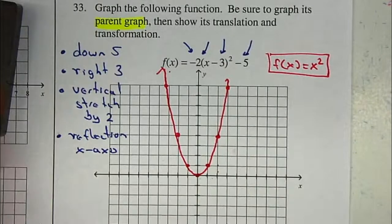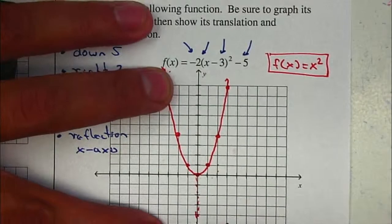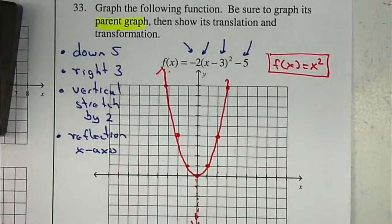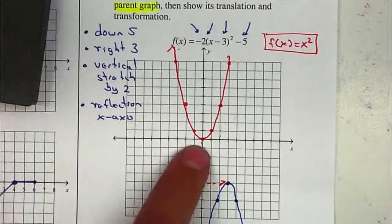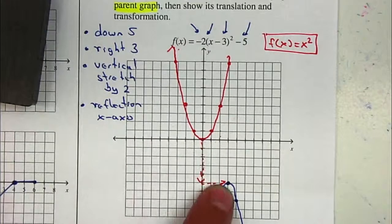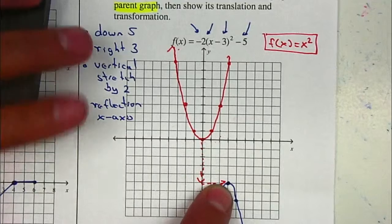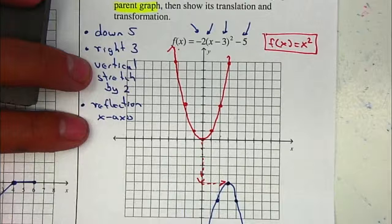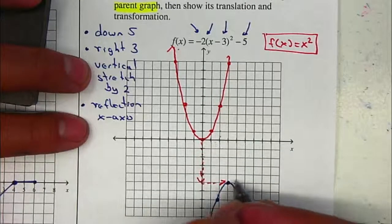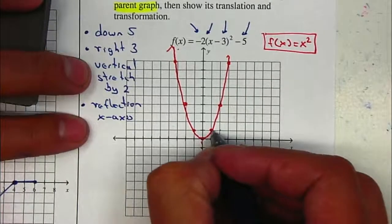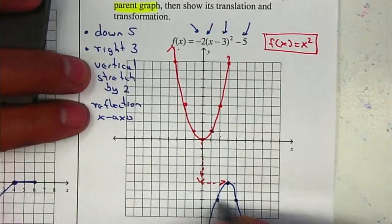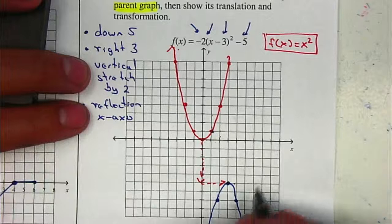Remember to show me the transformation, so you can just show me the arrows. And that will be your parent graph. So first, down 5 and to the right 3. I'm going to have to do my vertical stretch and my reflection at the same time. So the first point is to the right 1. It's up 1. Multiply by 2 will be 2, but then reflected will be down 2. And then the line of symmetry.